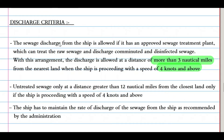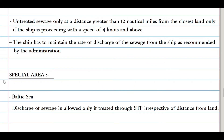The discharge criteria of Annex 4 are as follows: sewage discharge is allowed if the ship has an approved sewage treatment plant or uses comminuting and disinfecting equipment — in which case discharge is allowed at a distance of more than 3 nautical miles from the nearest land, provided the ship is proceeding at a speed of 4 knots or above. Untreated sewage can only be discharged at a distance greater than 12 nautical miles from the closest land, also at a speed of 4 knots or above. The rate of discharge must be maintained as recommended by the administration.